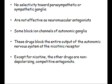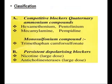Nicotine is the prototype of ganglionic blockers. However, the other drugs are non-depolarizing competitive antagonists. Ganglionic blockers are classified into two types: competitive blockers (quaternary ammonium compounds) and persistent depolarizing blockers.